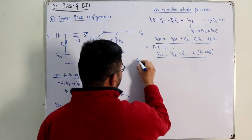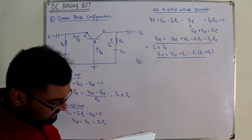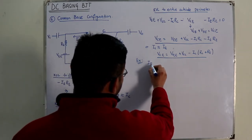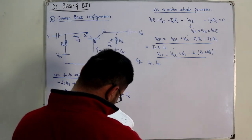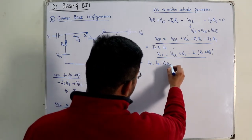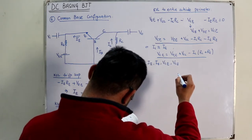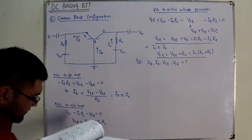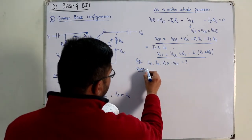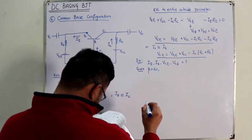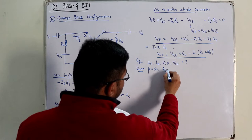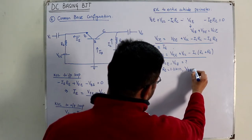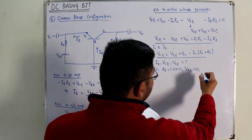Moving to a book example: determine IE, IB, VCE, and VCB for the common base configuration as shown. The given values are: beta = 60, RE = 1.2 kΩ, VEE = 4 V, RC = 2.4 kΩ, and VCC = 10 V.